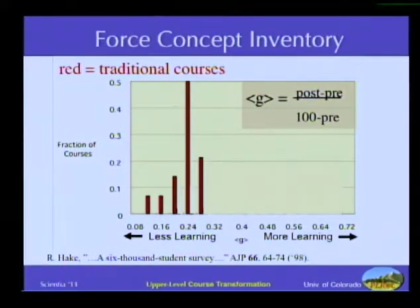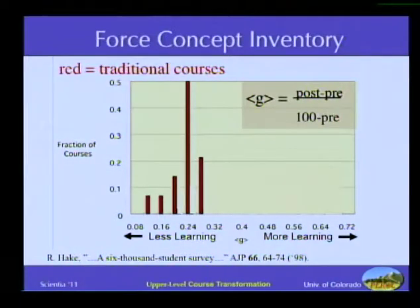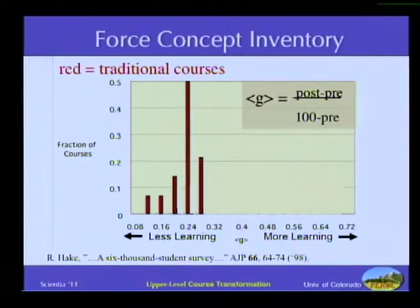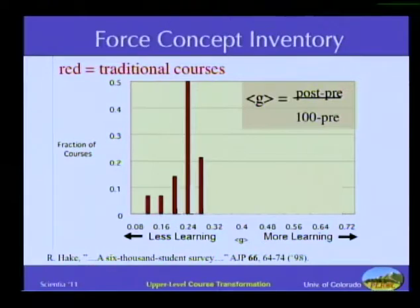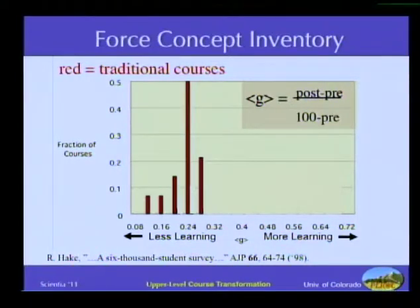The horizontal axis of this histogram is basically how much students learned in an intro physics class. You give a pre-test, you give that same test again at the end of the semester as a post-test, and you subtract — that's how much the students learned — and you divide by how much they could have learned. This is the fractional gain: the percent of what they didn't already know that they learned this semester. It's a meta-study of 6,000 students at a dozen universities across the country. The histogram is fairly narrow and centered around 25%, meaning traditionally taught courses are teaching students about a quarter of what they didn't already know.